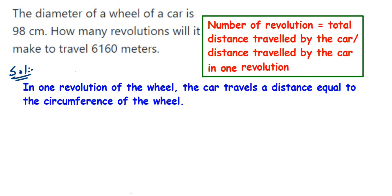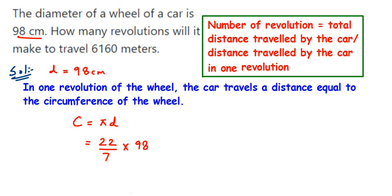First, we find the circumference. Circumference C = 2πr, or we can use C = πd. Since diameter is given, we use πd. So C = (22/7) × 98. We cancel 98 and 7 — 7 × 14 = 98 — leaving 22 × 14 = 308 centimeters.